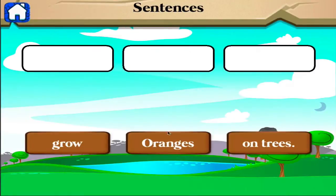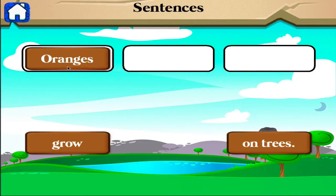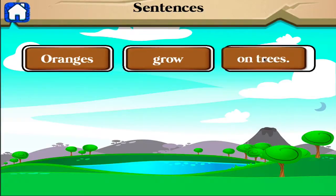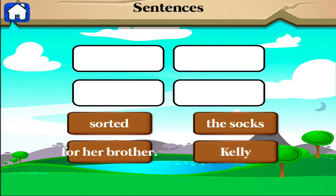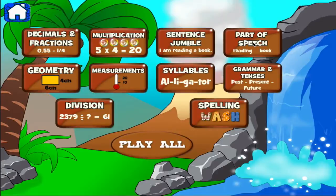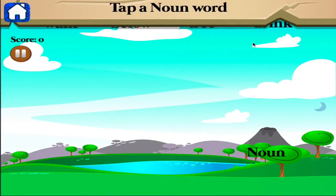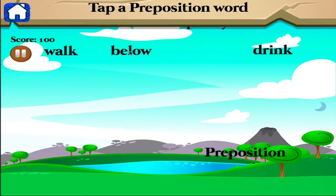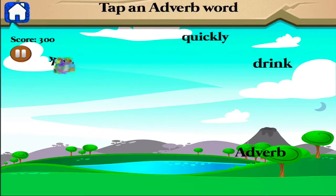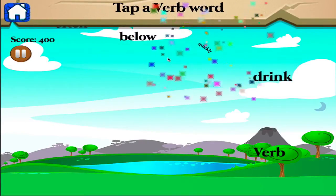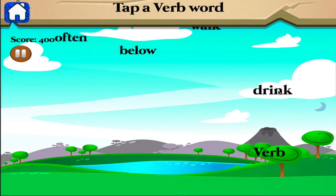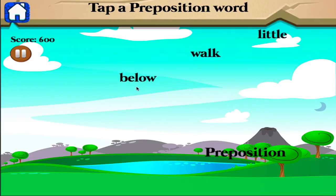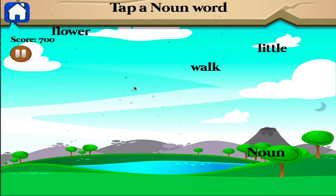Arrange the phrases by dragging the words in correct order to complete the sentence. Terrific! Arrange the phrases. Find the noun. Find the preposition. Find the verb. Find the adverb. Good. Find the preposition. Find the noun.